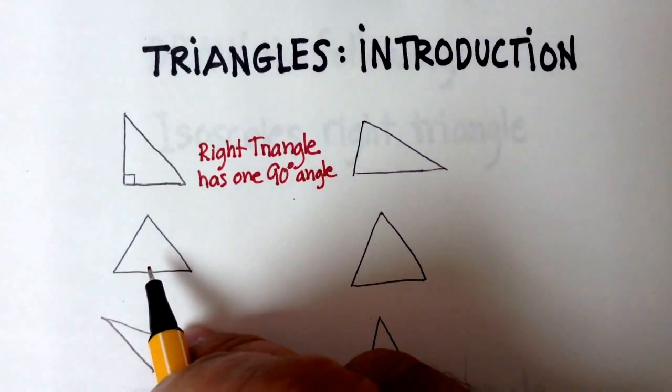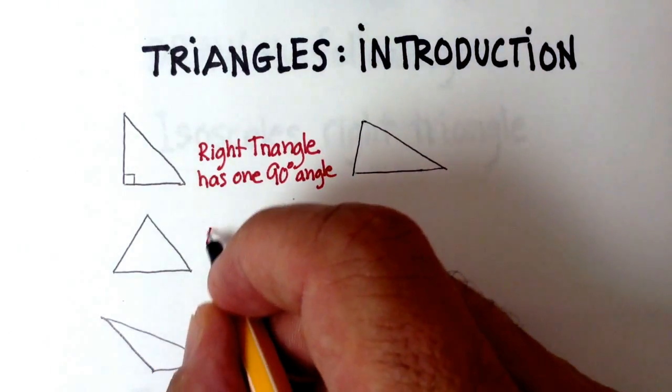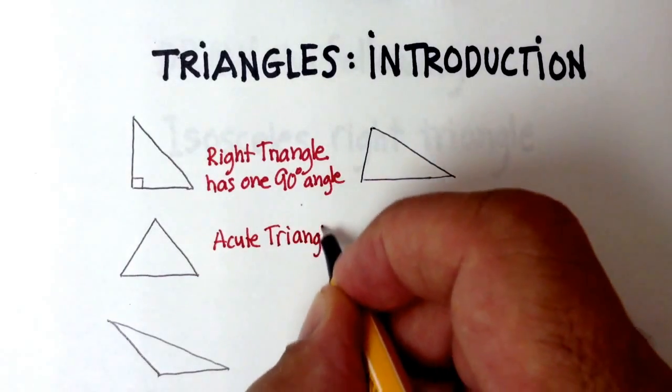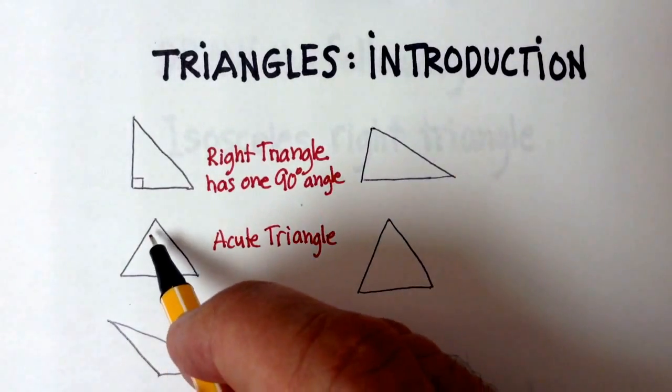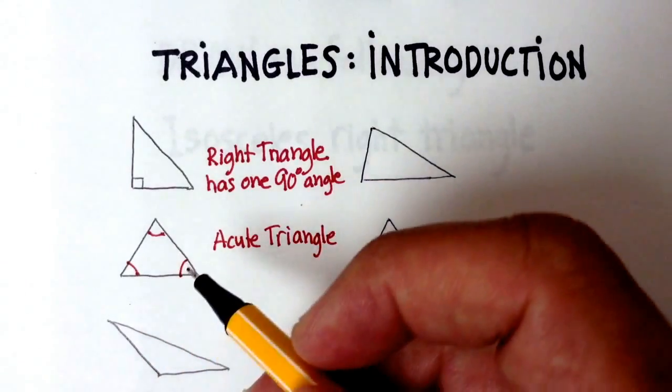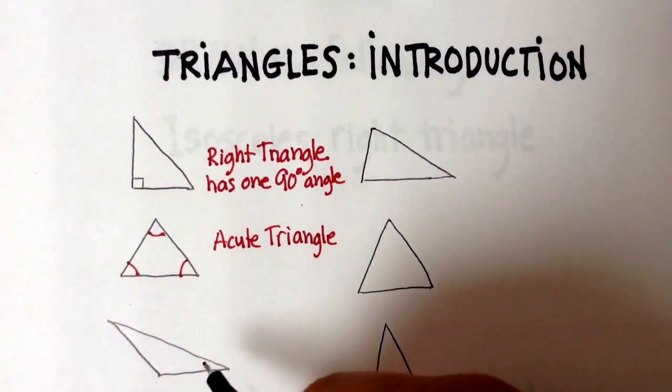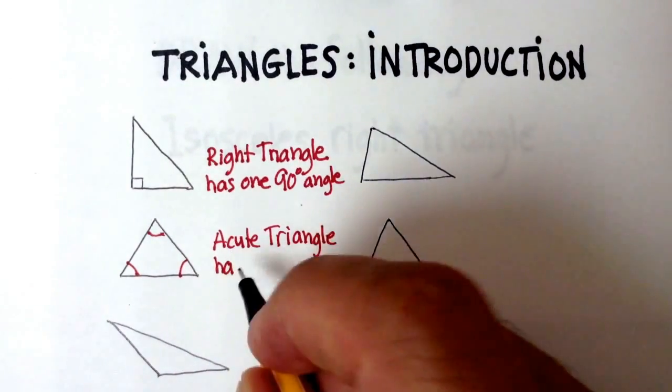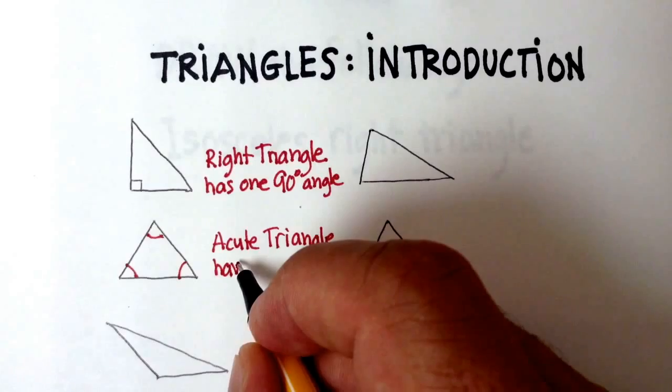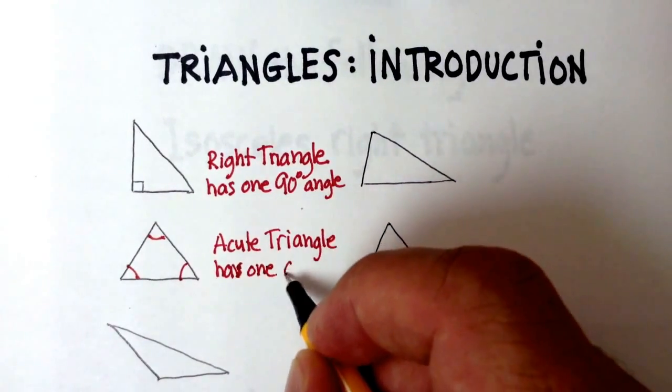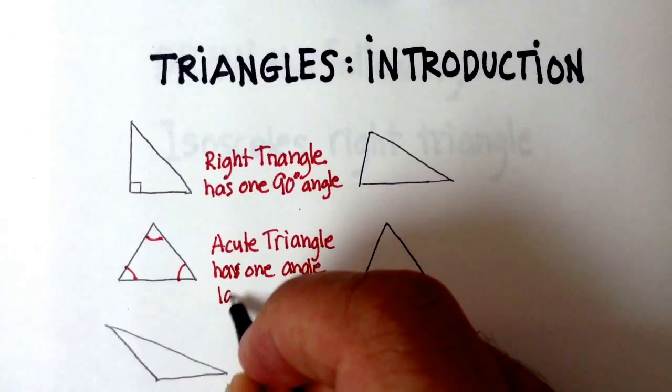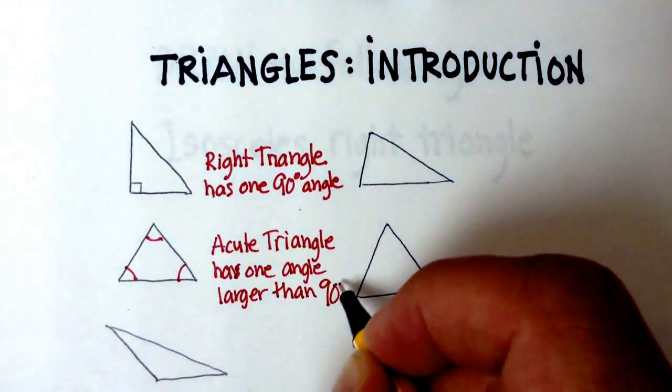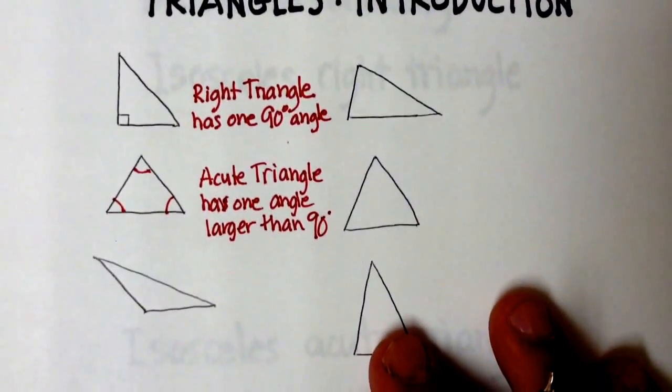Now, the second kind of triangle is this one here that we're going to talk about, and this one's called an acute triangle. You can guess that it's called an acute because each of the angles inside is less than 90 degrees. So let's just say this acute triangle has no angle larger than 90, and that's the important characteristic for that one.